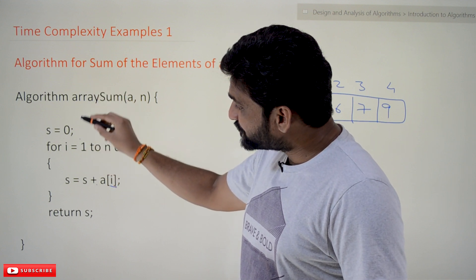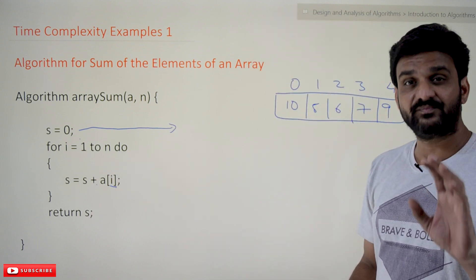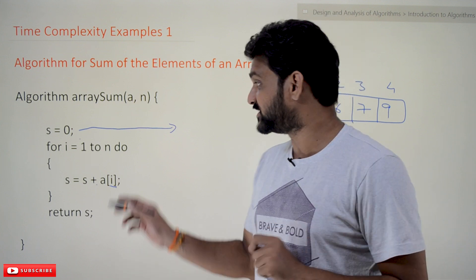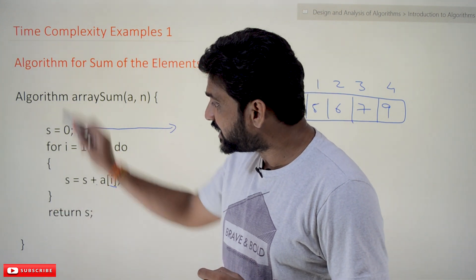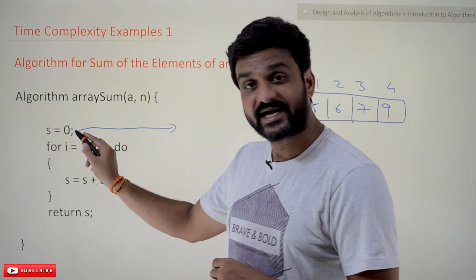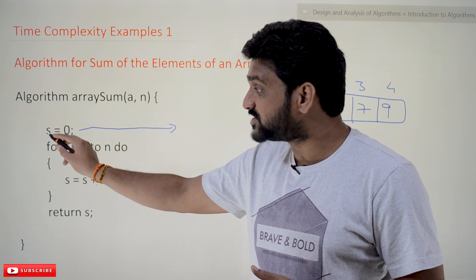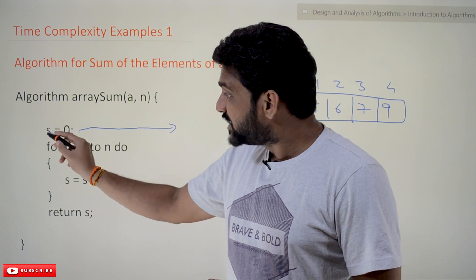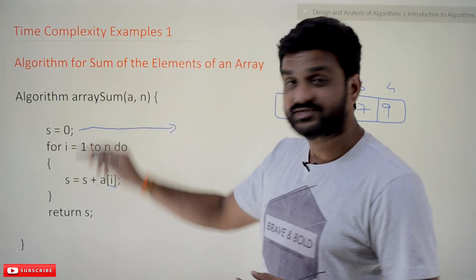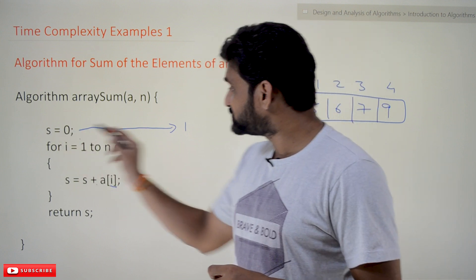Consider this first line of code: before the completion of this entire algorithm, how many times does this line of code get executed? This is a program step — a semantically and syntactically meaningful line of code, independent of all instance characteristics. We are not concerned about the micro operations required. So how many times does this line get executed in the entire execution of this algorithm? It will get executed one time.